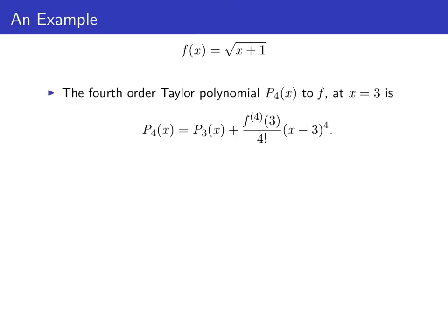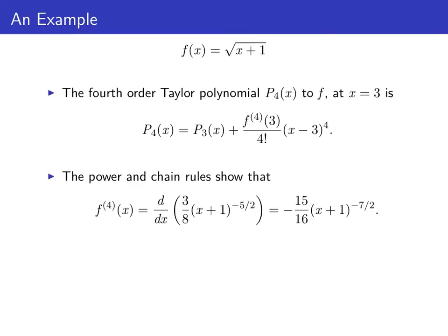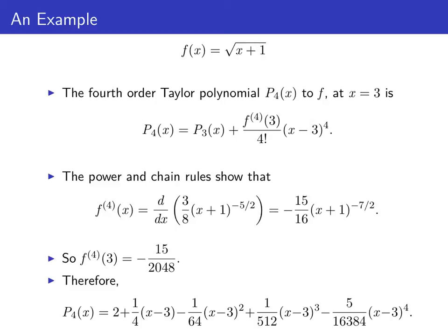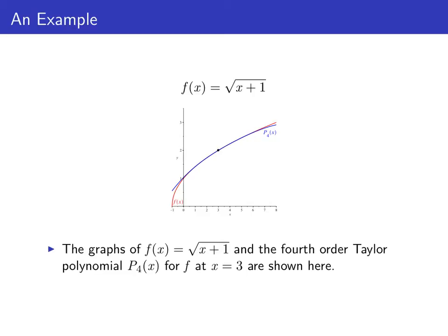To find p sub four of x, we've already found p sub three of x, so all we need is the fourth derivative of f evaluated at three, which is negative fifteen over 2048. This gives us p sub four of x equal to two plus one quarter times x minus three minus one over 64 times x minus three squared plus one over 512 times x minus three cubed minus five over 16384 times x minus three to the fourth. These Taylor polynomials are polynomials in powers of x minus three, and p sub four of x is a good approximation to f of x for x close to three.